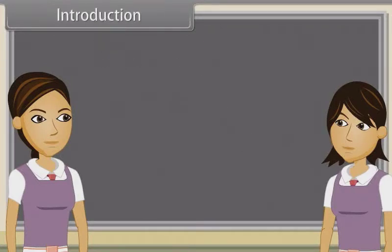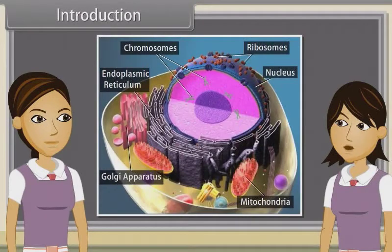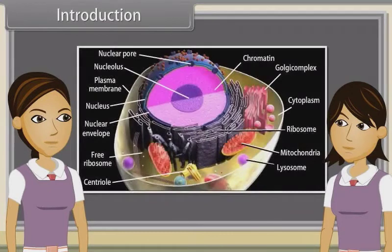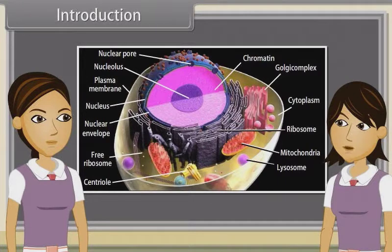We have discussed the structure of eukaryotic cells and the structure and functions of cell membrane and cell wall already. Now we will discuss the structure of endomembrane systems. We will also observe the structure of endoplasmic reticulum, Golgi apparatus, lysosomes, vacuoles, mitochondria, plastids and ribosomes.